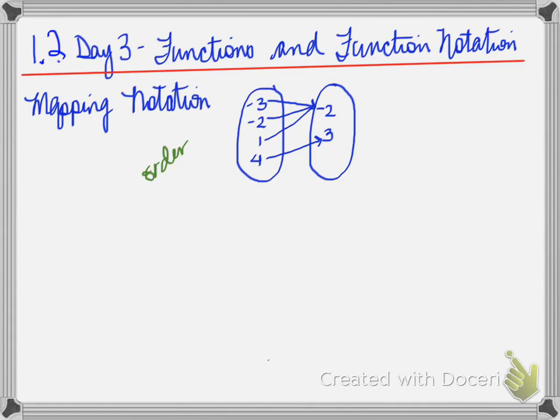Now when you look at it, you have the domain that will go to one of these y values. Now the question here would be, is this a function or not? Well, when you remember the definition, the definition of a function says for every x there can only be one y. Do all of these x's only have one y?